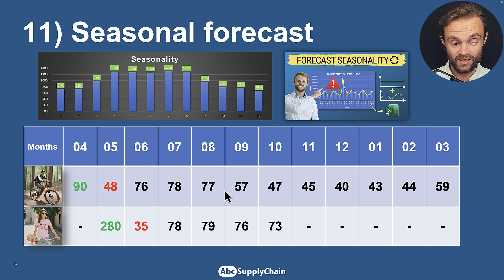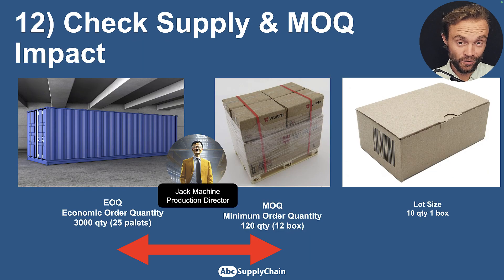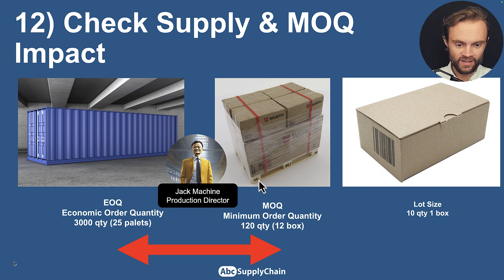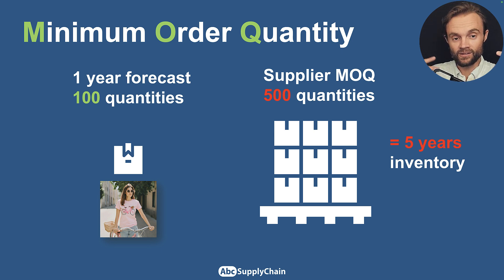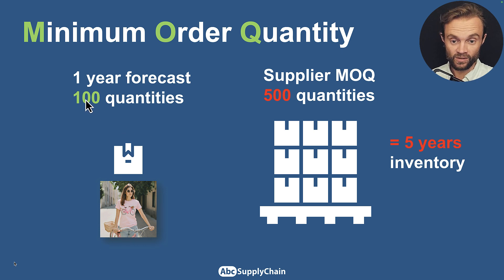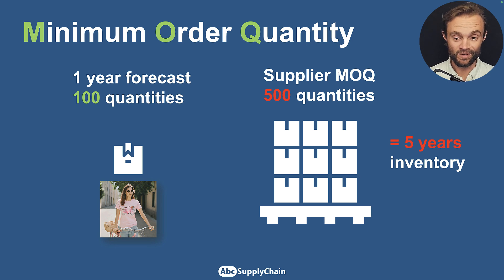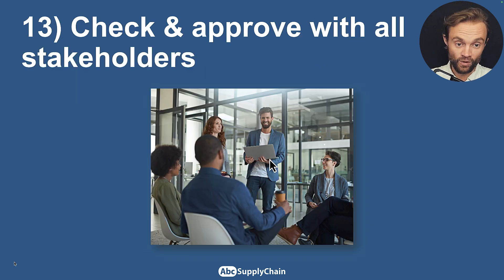Once you have the forecast, check with supply chain on the minimum order quantity (MOQ) impact. For example, you want 100 units but your supplier says the minimum is 500. I've seen so many overstock situations because of this — your forecast is great but the MOQ is too high. In this example, wanting 100 but getting 500 minimum means five years of inventory. Always double-check the inventory turnover of your MOQ before confirming any new product launch.